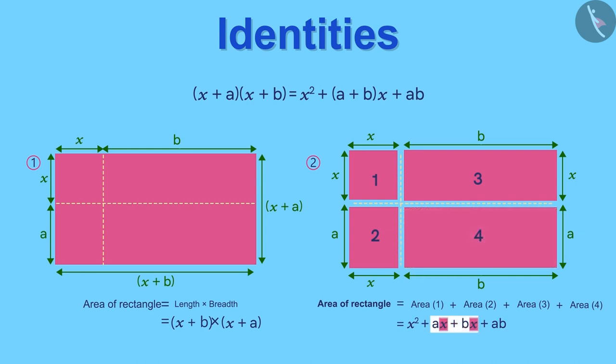Taking x as common from the middle two terms, we will get the final answer as this. The area of the rectangle that we get using both the methods will be equal. As you can see that this is the same identity that we saw earlier.